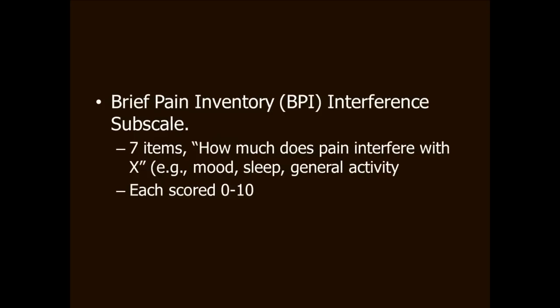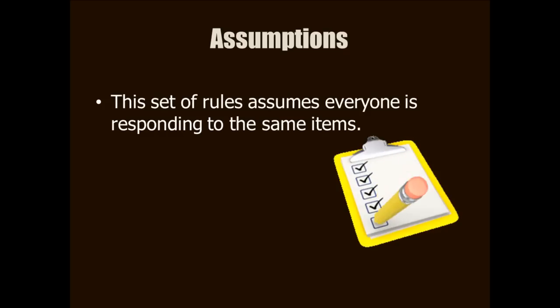I'm going to answer that question using an example: the pain interference subscale of the Brief Pain Inventory, also called the BPI. This BPI subscale has seven items, and each of them asks about how much pain interferes with different activities and functions. Each of the seven items is scored from zero to ten. An important assumption in classical test theory is that everyone is responding to the same items — the scoring system doesn't work well if one person answers four items and another answers all seven.